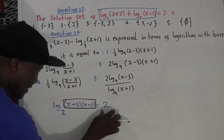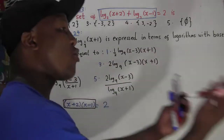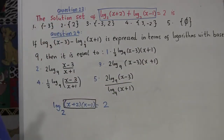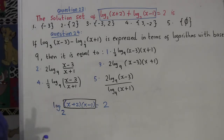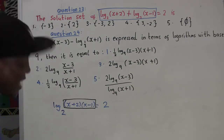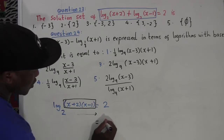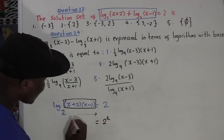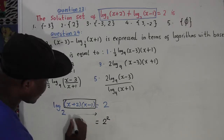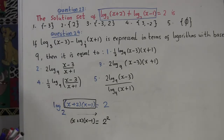Now I can apply the exponential rule. You apply the exponential rule when you have a log on one side equal to something on the other side. We have that here, so we push the base 2 to the right side as an exponential. We're left with (x plus 2)(x minus 1) equals 2 to the power 2, which equals 4. This is now a quadratic equation.